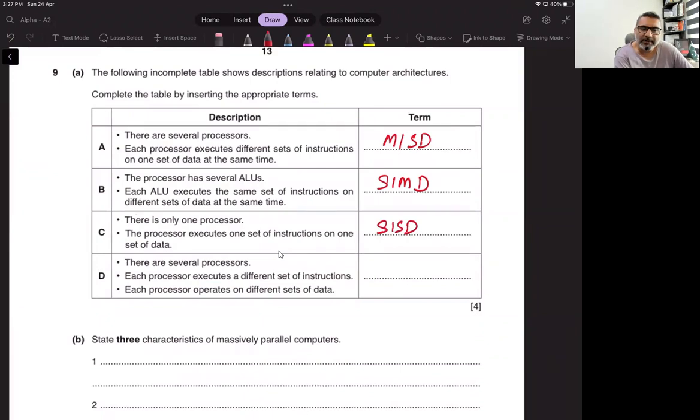There are several processors. Each processor executes a different set of instructions. Each processor operates on different sets of data. This is our nowadays computer: multiple instructions, multiple data. Multiple instructions means multiple programs. Multiple data means every program is using their own data.